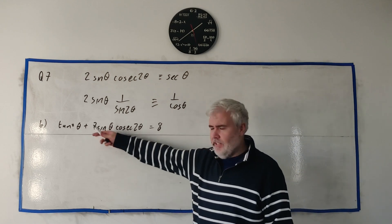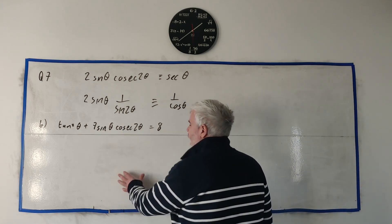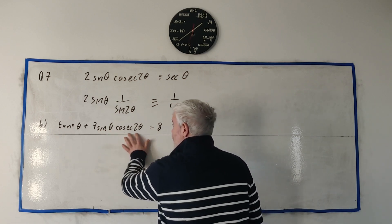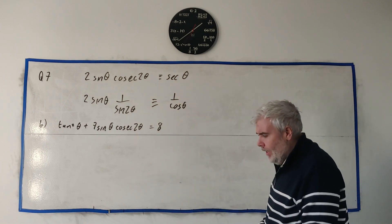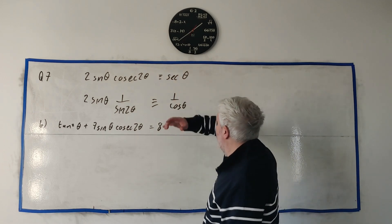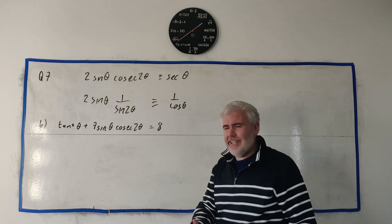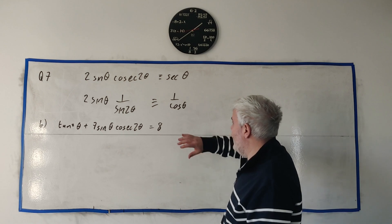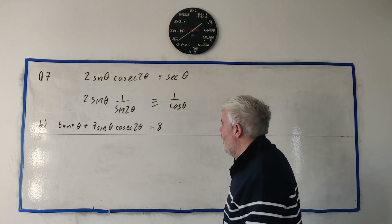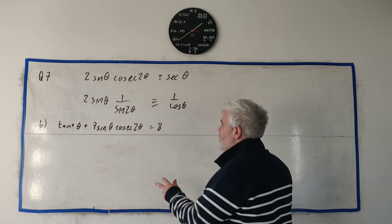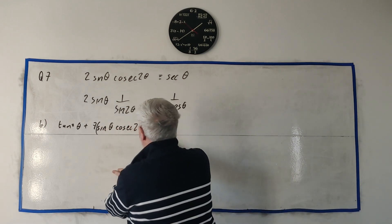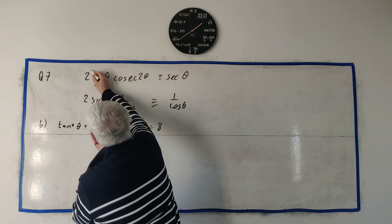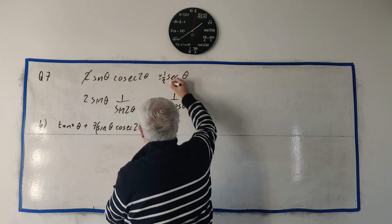In part b, they give us this very nasty looking equation. But hopefully we notice that a lot of this is similar to what they gave us up here. Now you can solve this using secants in your answer, but like I already said, I don't like using them, so I never do. So I'm going to end up turning everything into cosines and sines.